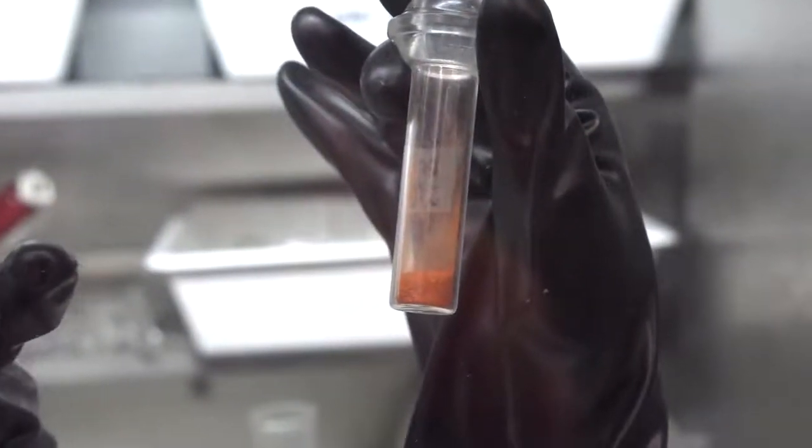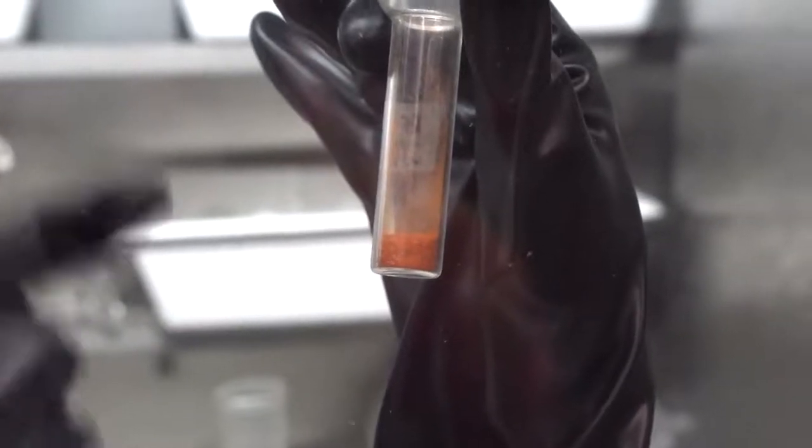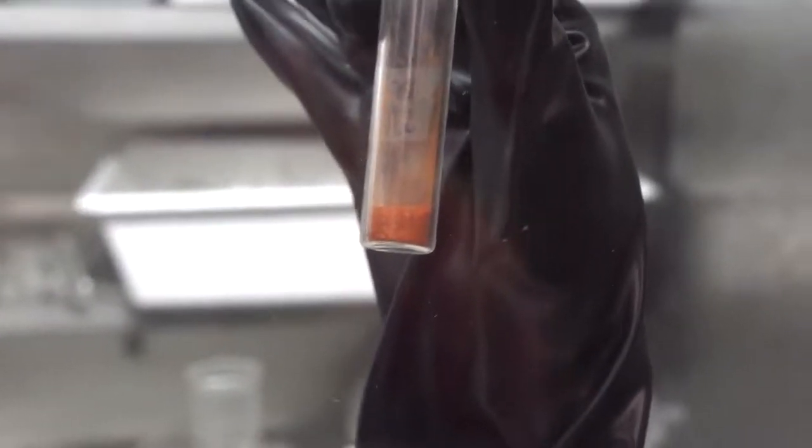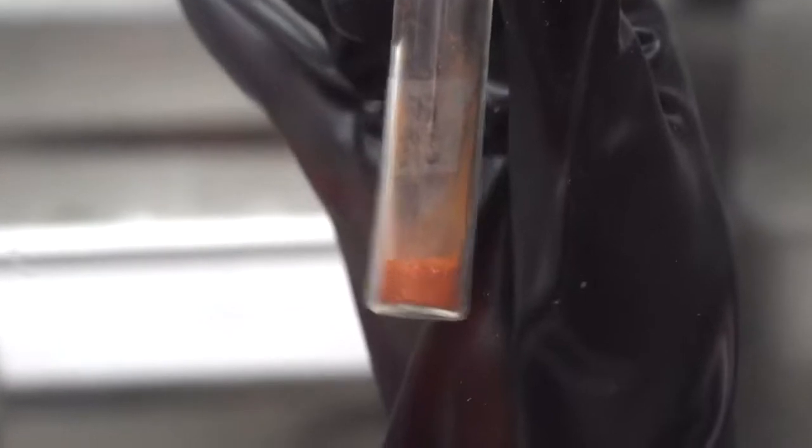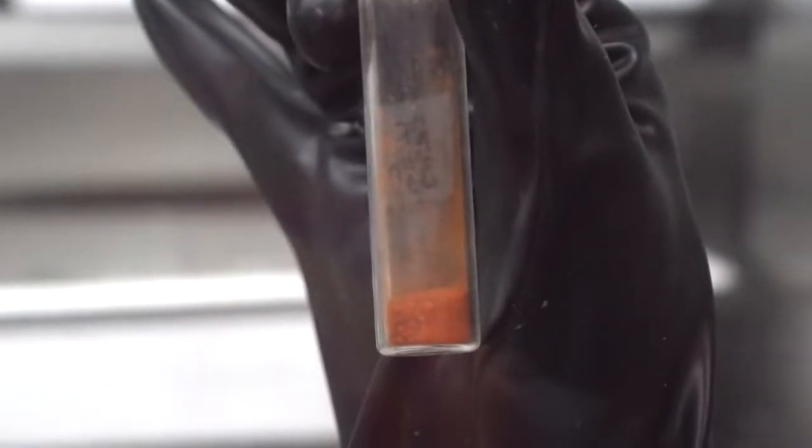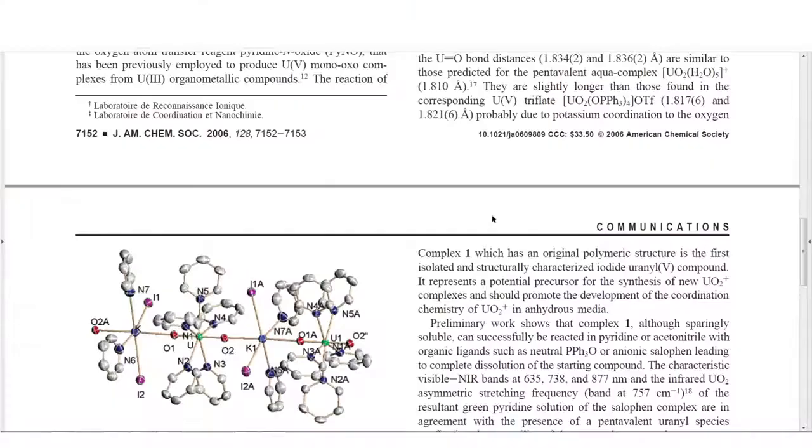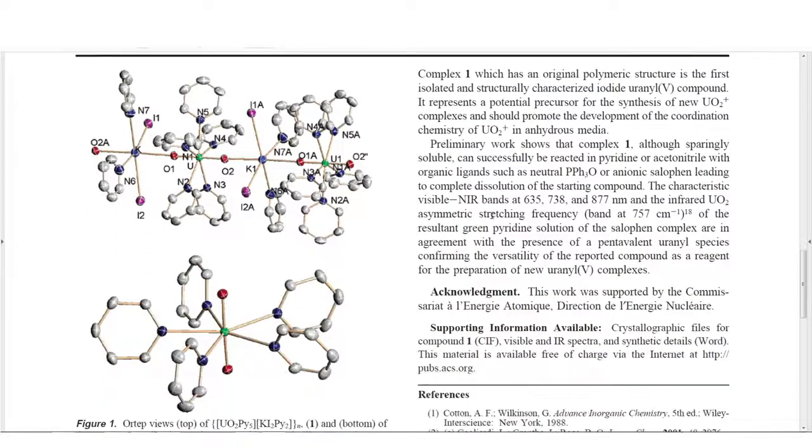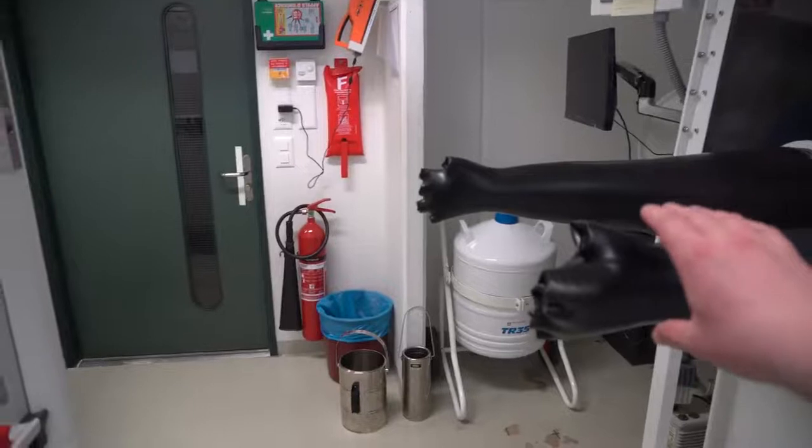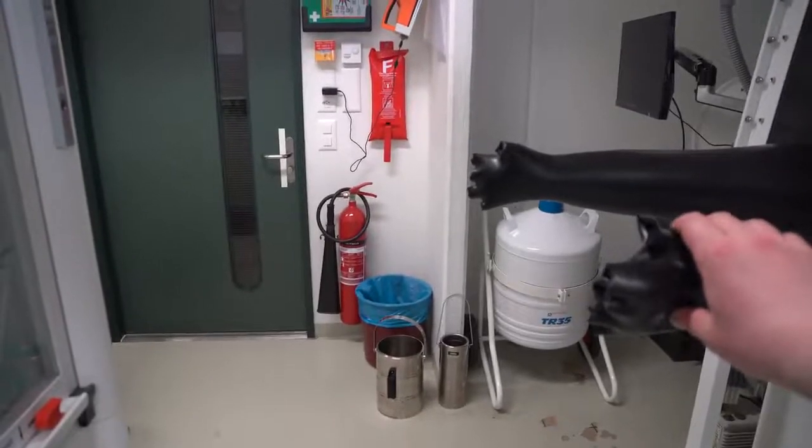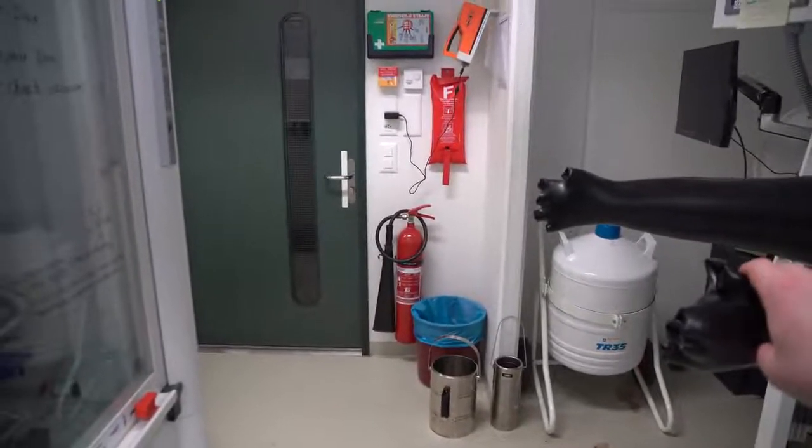There are also uranium compounds with plus five oxidation state. However, only in 2006 stable uranium compounds with plus five oxidation state were obtained that didn't break down at room temperature. It was achieved as a result of stabilization of uranyl ion with the help of organic coordination ligands. And if you think that scientists were doing useless things, I hasten to question that statement.